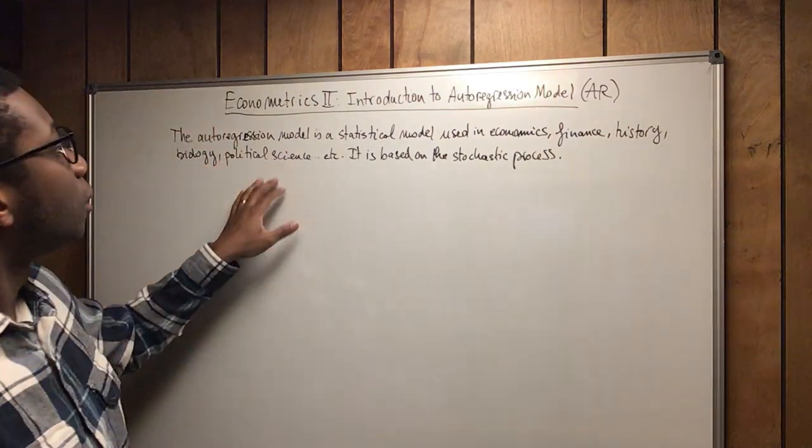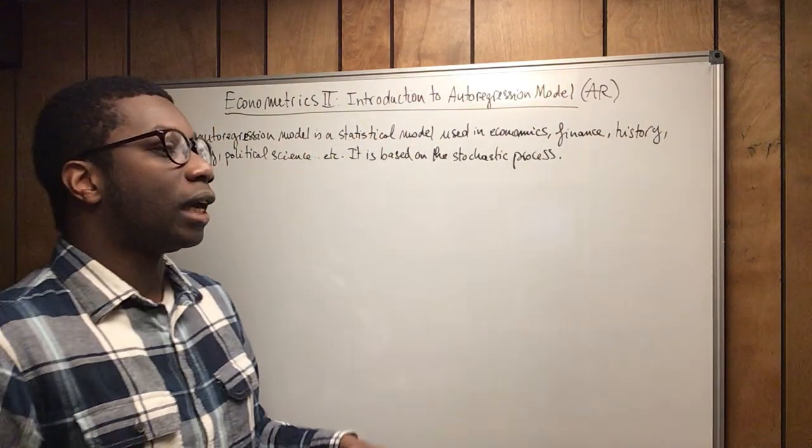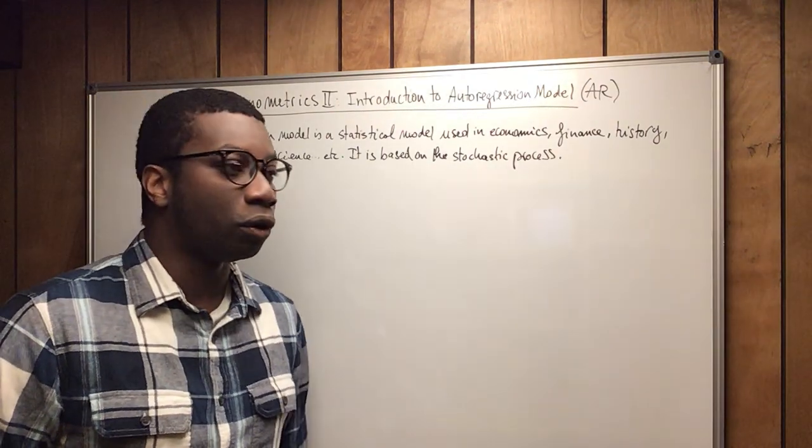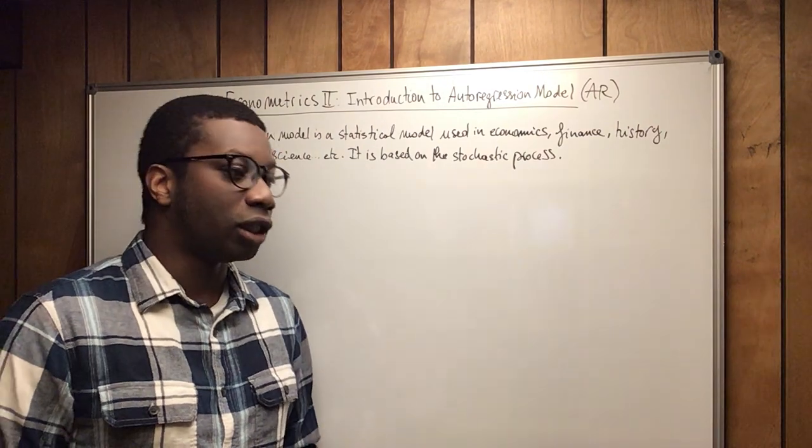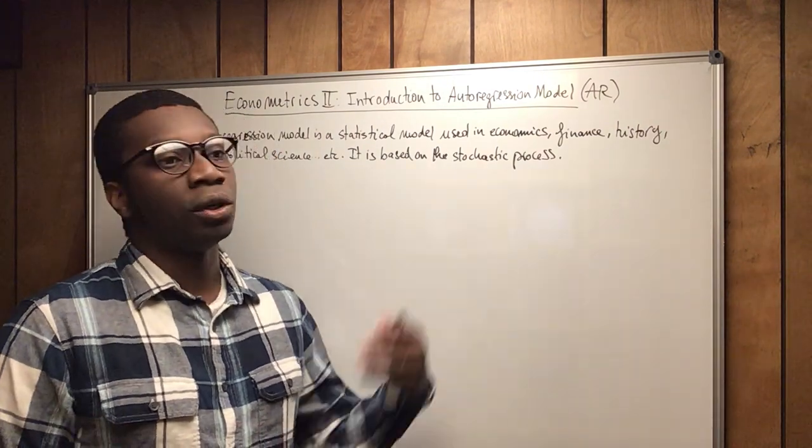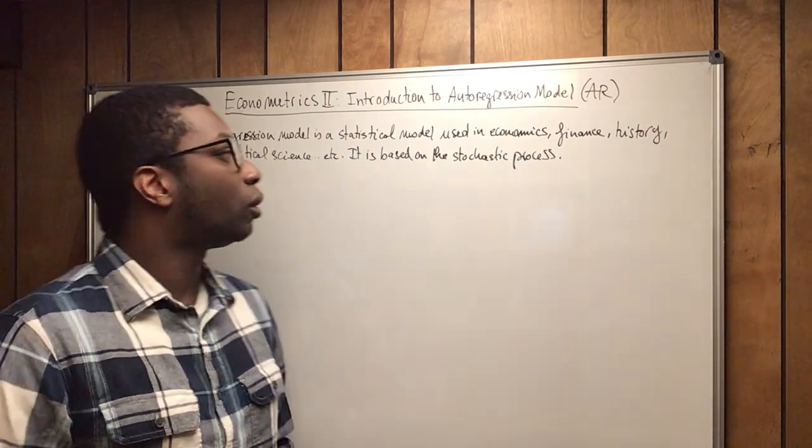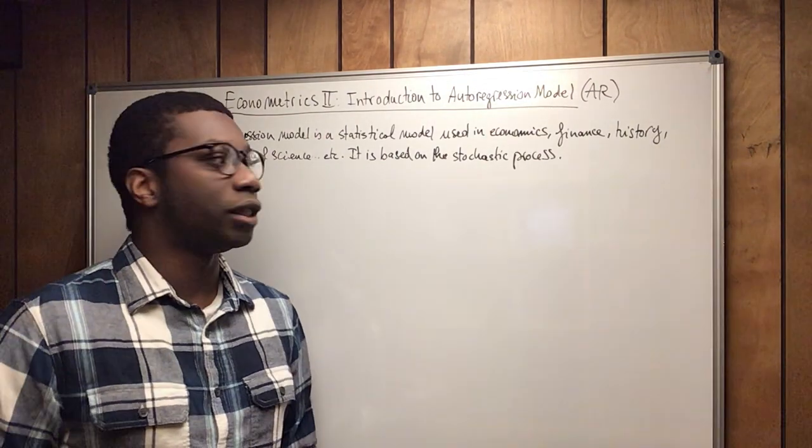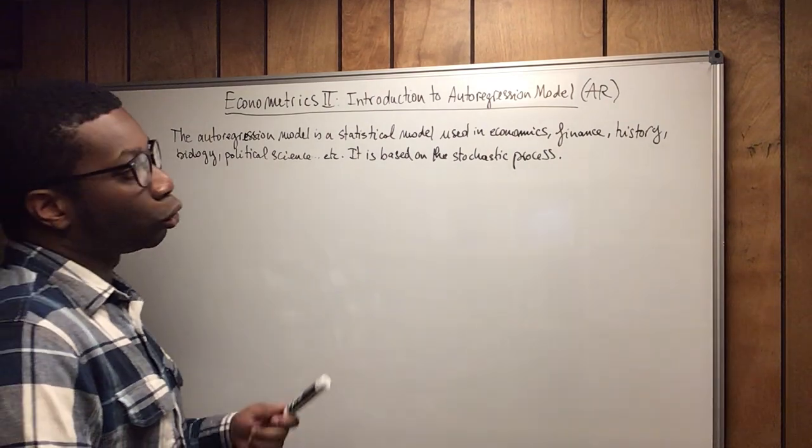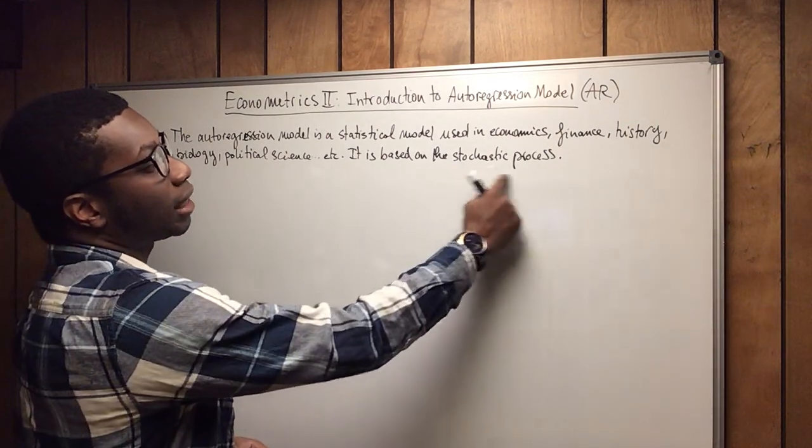But here, the autoregression model and the other models such as the vector autoregression or the autoregression integration moving average. So you have the ARIMA, the ARMA, all of these models. We use them in what we call time series or we can also call it the stochastic process.